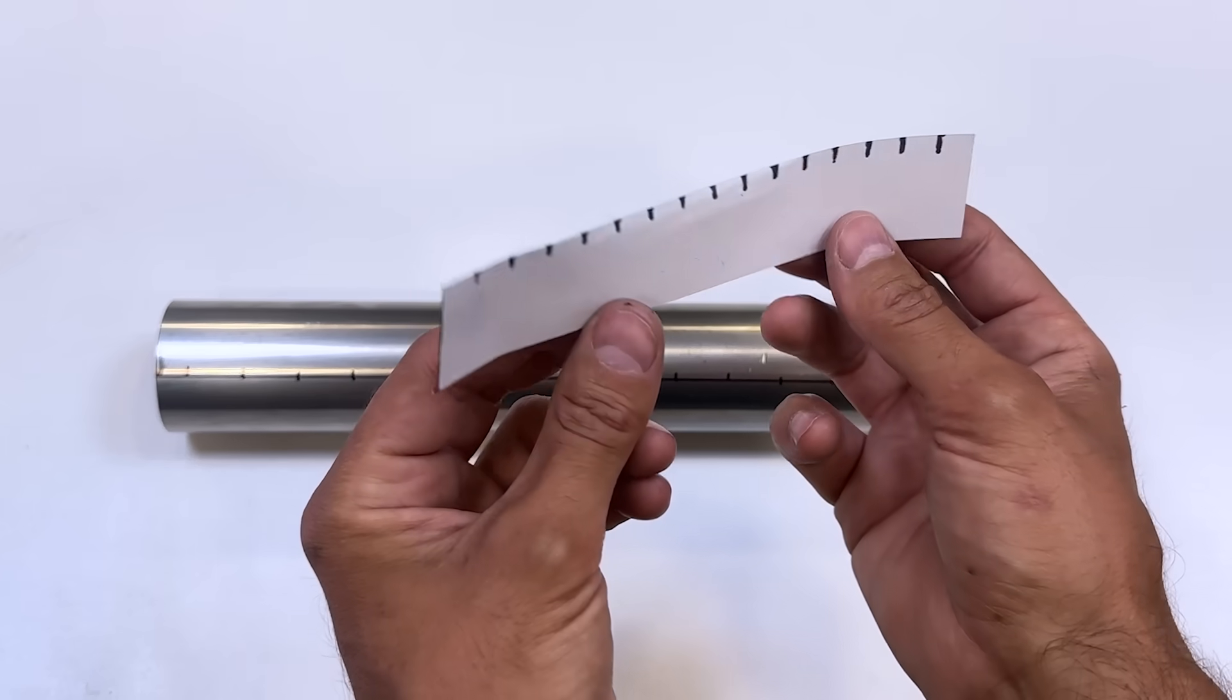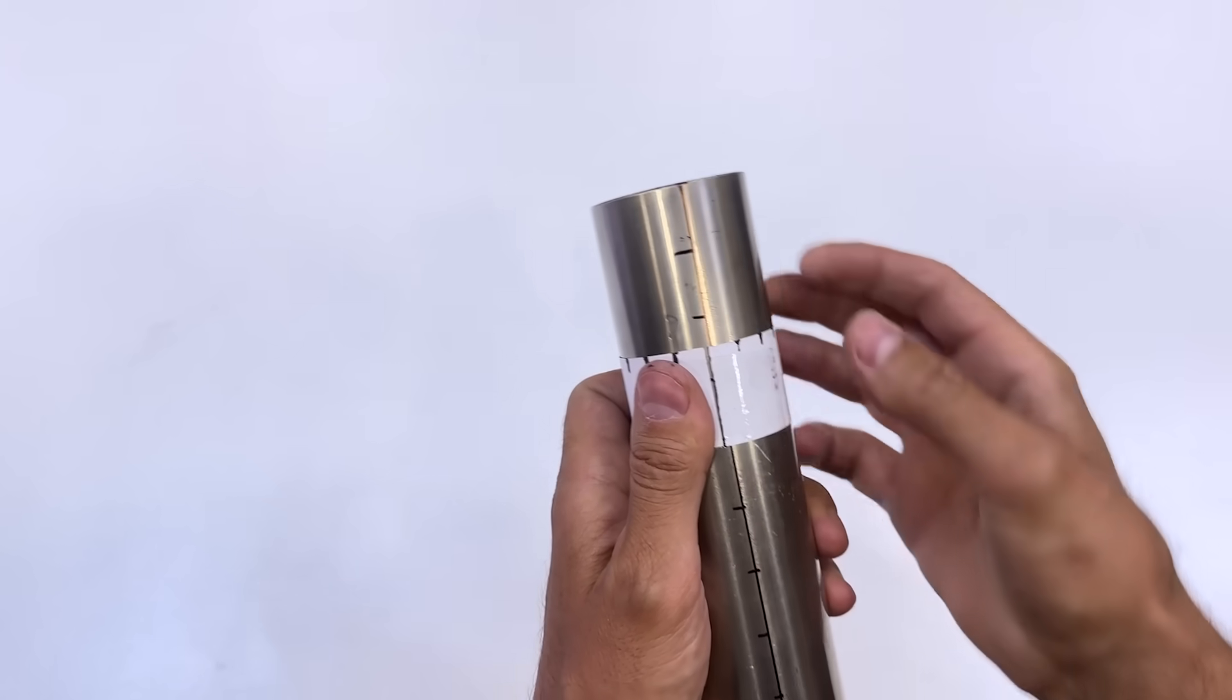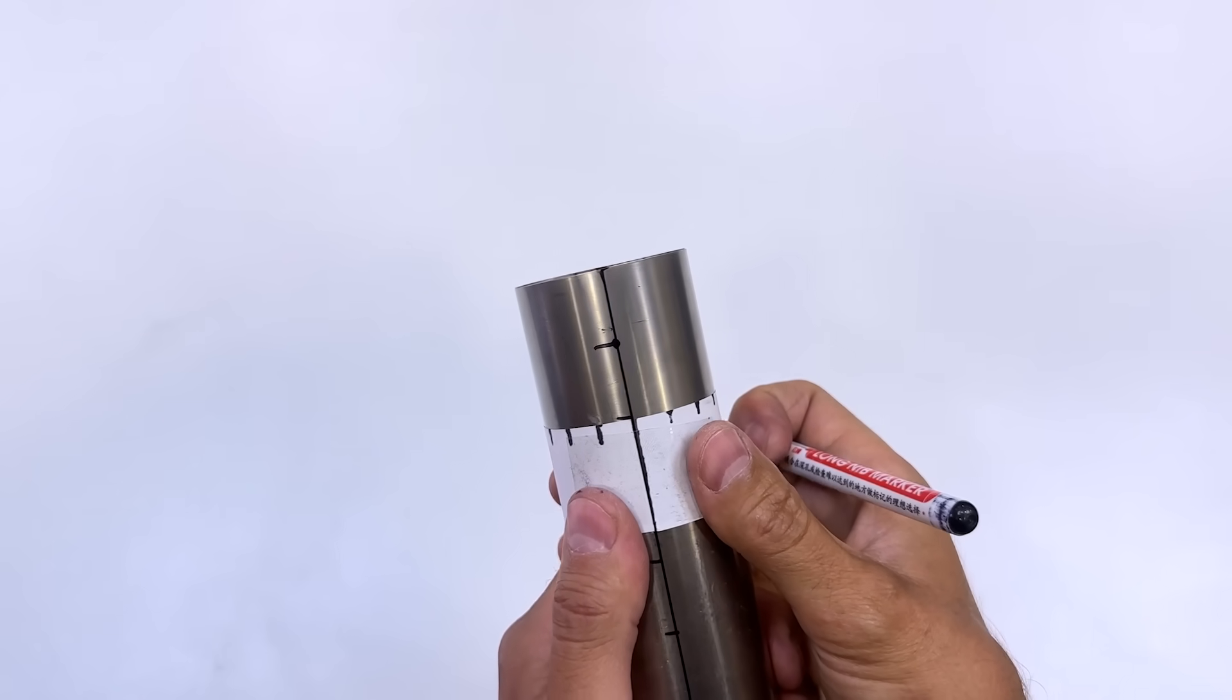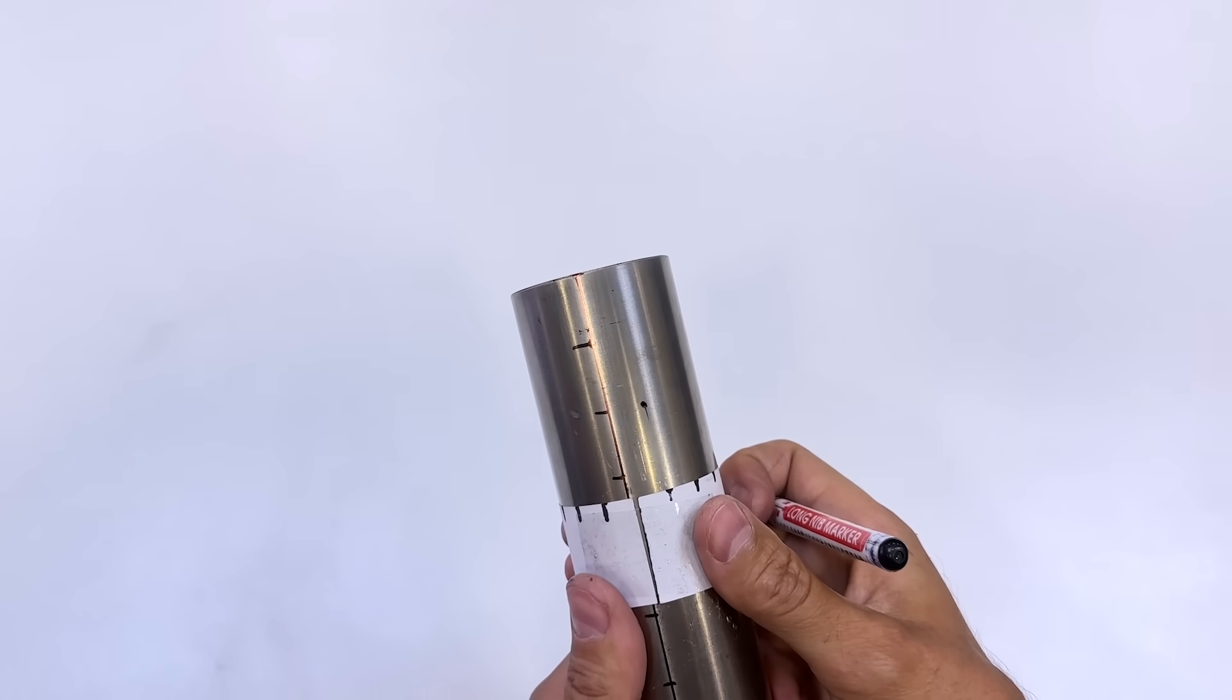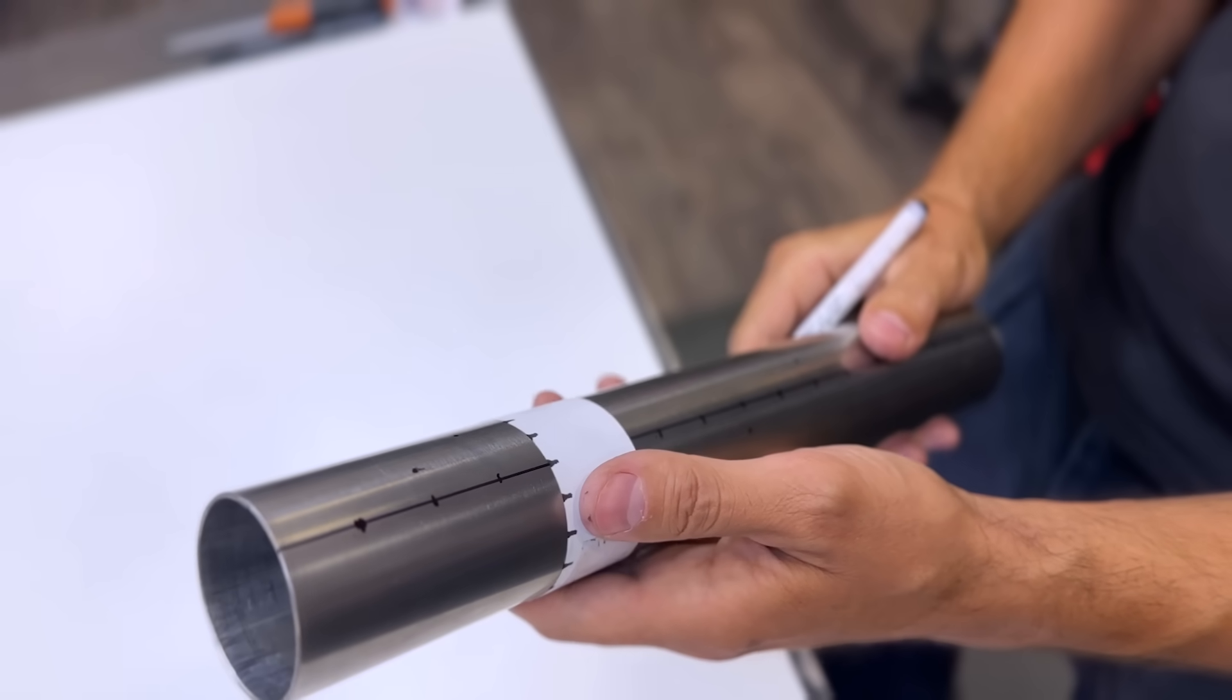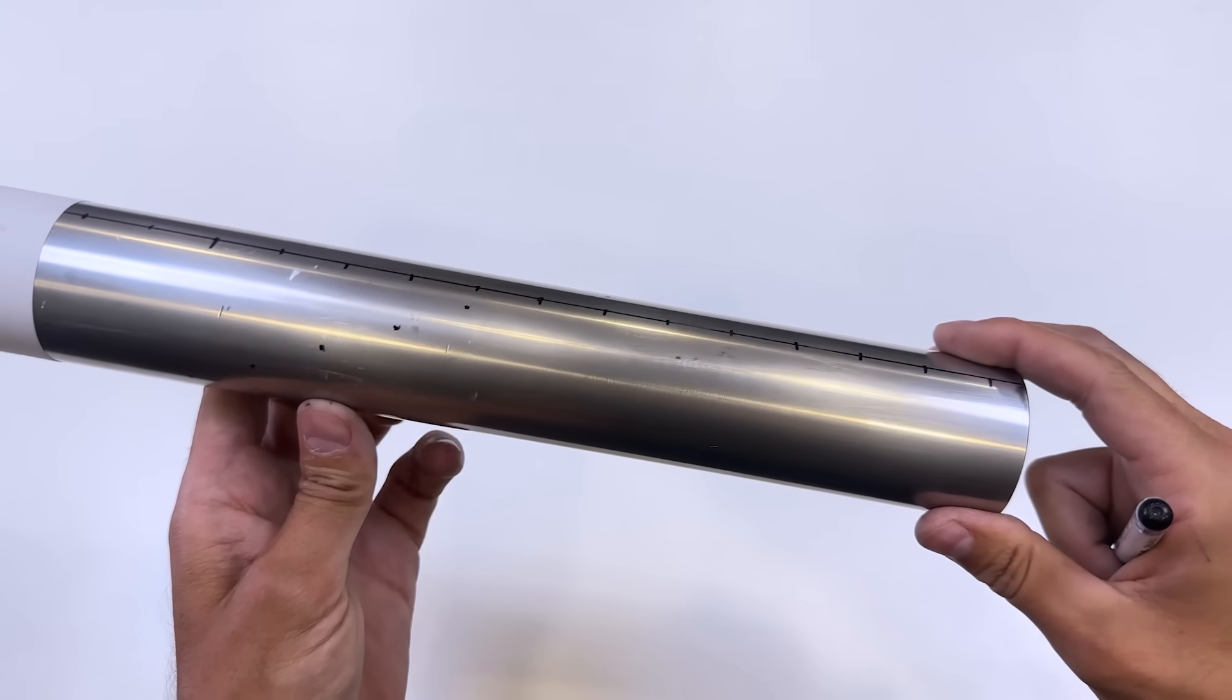Here is this paper template with 16 exact divisions. The template is 157 mm long, which is the circumference of the tube. This template will help us draw spiral holes along the tube. We'll mark the position of each hole and move the template along the tube. We now have a first spiral marked.